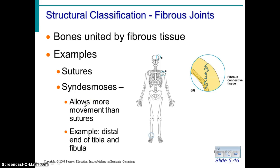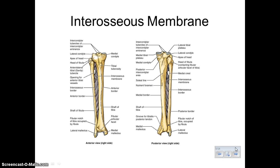In addition to sutures, syndesmosis refers to another type of fibrous joint. It has longer fibers and therefore allows for a little bit more movement, as opposed to sutures. The distal end of the tibia and fibula would be an example of this. Looking at the next slide, you can see where that tissue connects the tibia to the fibula. When someone talks about having a high ankle sprain, this is the tissue they're talking about damaging, and often that takes a little bit longer to heal.